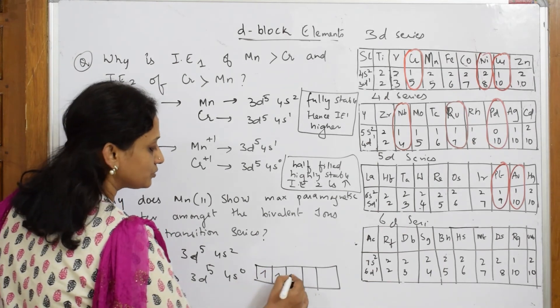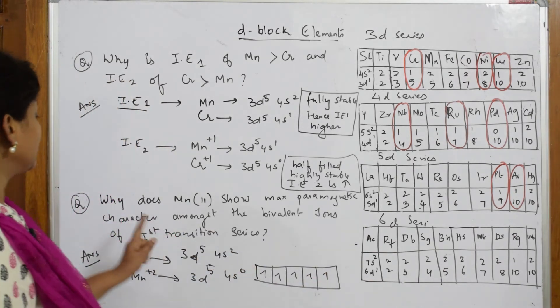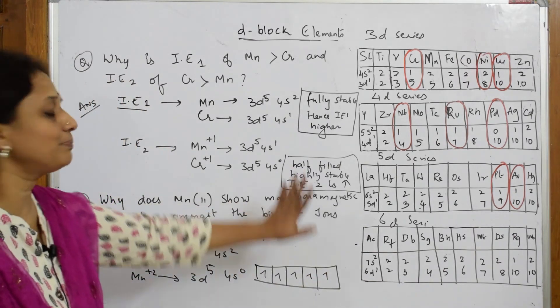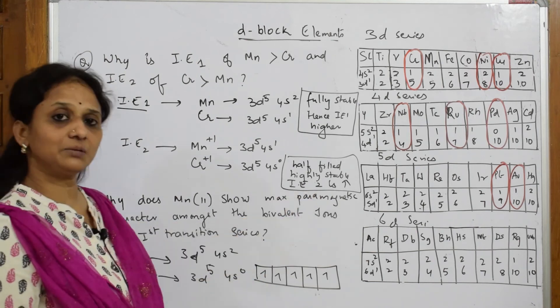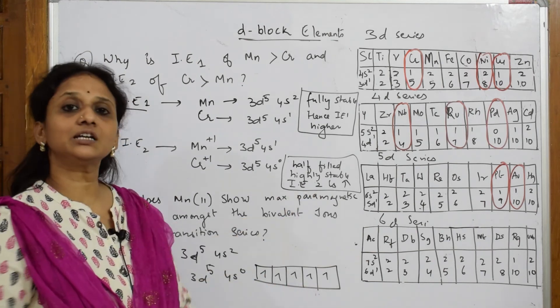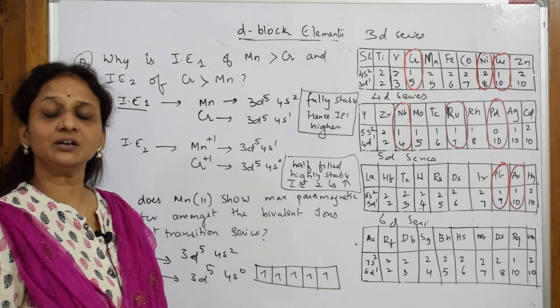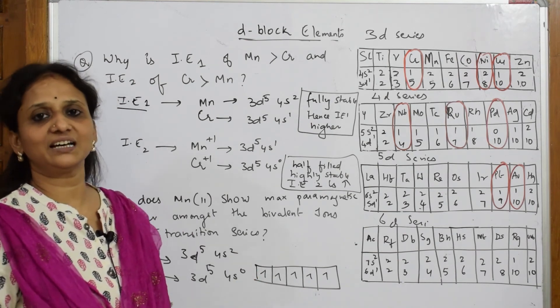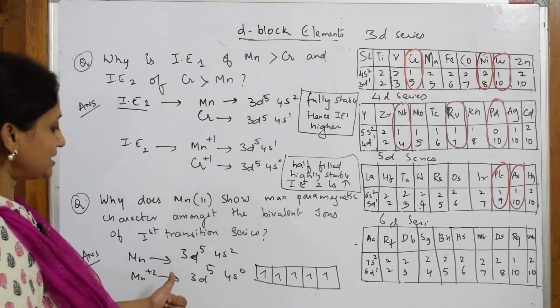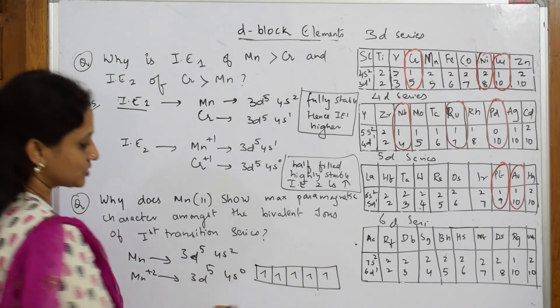Why does Mn show maximum paramagnetic behavior? What is paramagnetic behavior? When they have unpaired electrons, we call it paramagnetic behavior. When you have paired electrons, we call it diamagnetic behavior. Now when I see, all are unpaired electrons, so this is paramagnetic in nature.